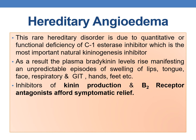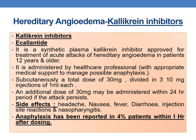Coming to hereditary angioedema: this is a rare hereditary disorder due to quantitative or functional deficiency of C1 esterase inhibitor, which is the most important natural kininogenesis inhibitor. As a result, plasma bradykinin levels rise, manifesting in unpredictable episodes of swelling of the lips, tongue, face, respiratory and gastrointestinal tract, hands and feet, etc. Inhibitors of kinin production and B2 receptor antagonists afford symptomatic relief in hereditary angioedema.